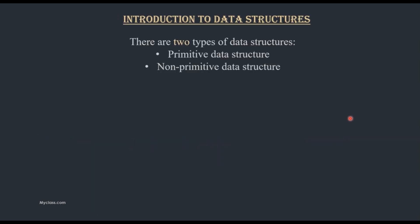Now we are going to different types of data structures. There are two types of data structures: Primitive data structure and non-primitive data structure.